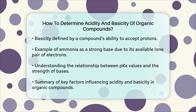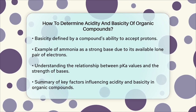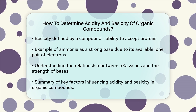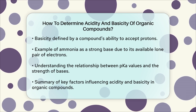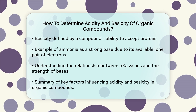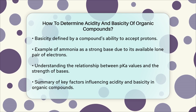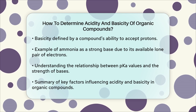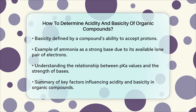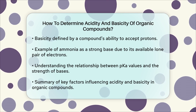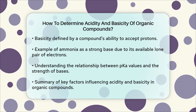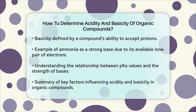For basicity, it's about how easily a compound can accept a proton. Bases like ammonia are more basic because their lone pair of electrons is more available to form a new bond with a proton. The basicity of a compound can also be understood by looking at the pKa values of its conjugate acid. A lower pKa value for the conjugate acid means the base is stronger.